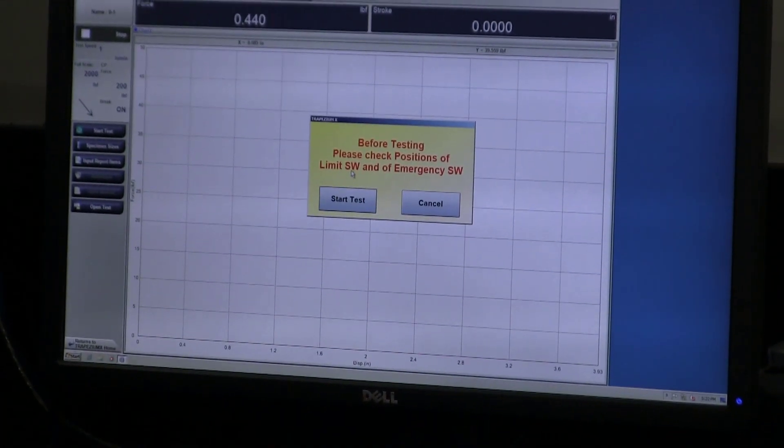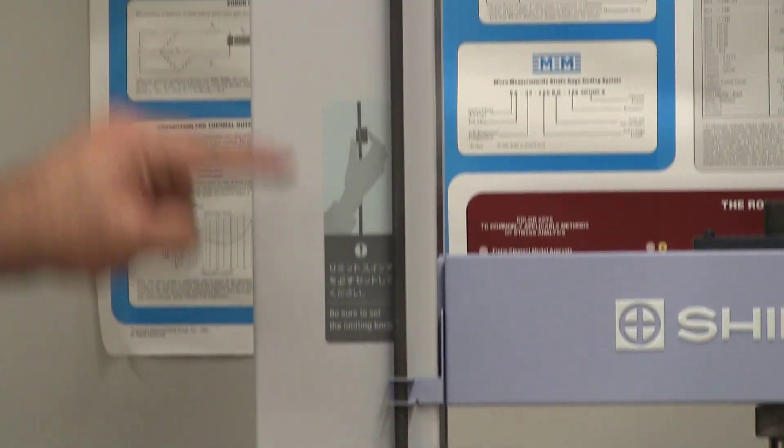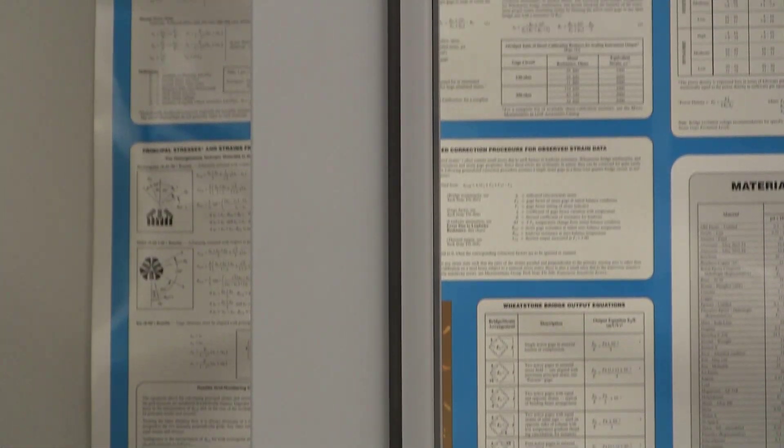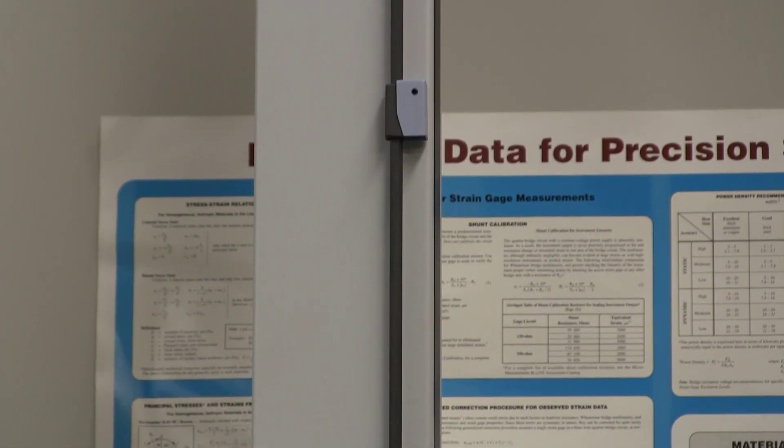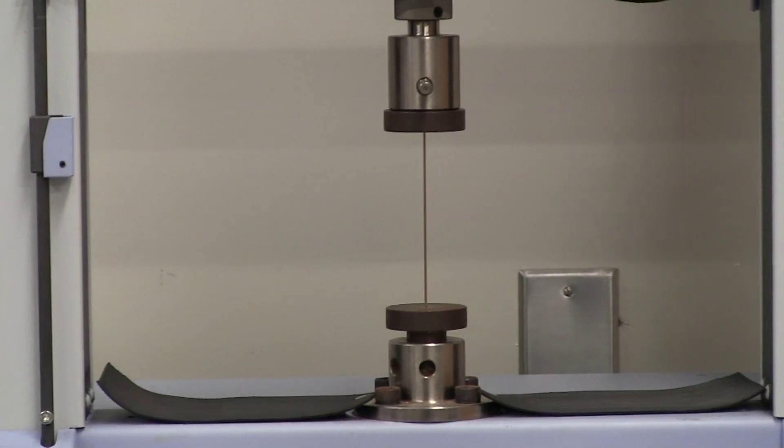It says check your limit switches. Limit switches are good. Limit switches are these switches over here and above, which basically are there to prevent you from destroying the test machinery. My limit switches and emergency switch are good. I'm going to start the test.